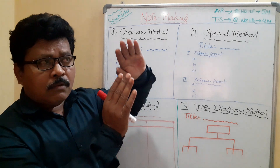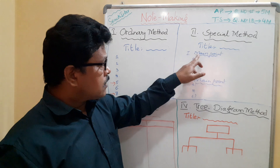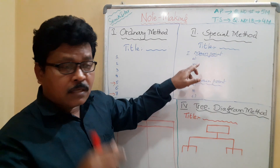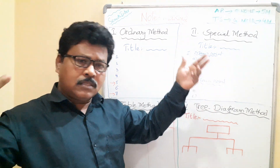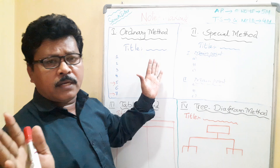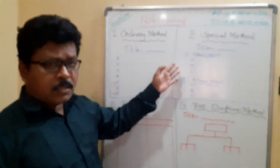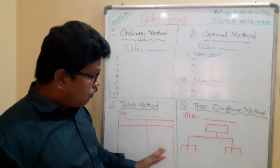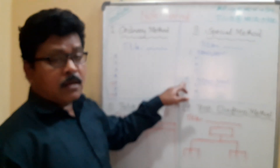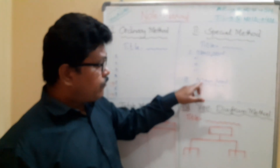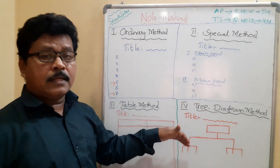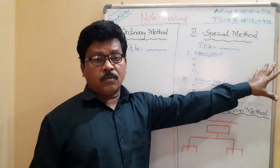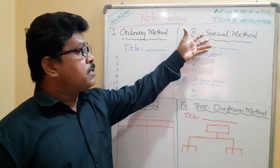In the special method, if the first paragraph gives all the causes, write 'causes' as the main point and list them as sub-points (a, b, c, d). There is no restriction on the number of sub-points here — the five-to-seven restriction only applies to the ordinary method. Then add a second main point for 'effects' and a third for 'solutions.' This is the special method.